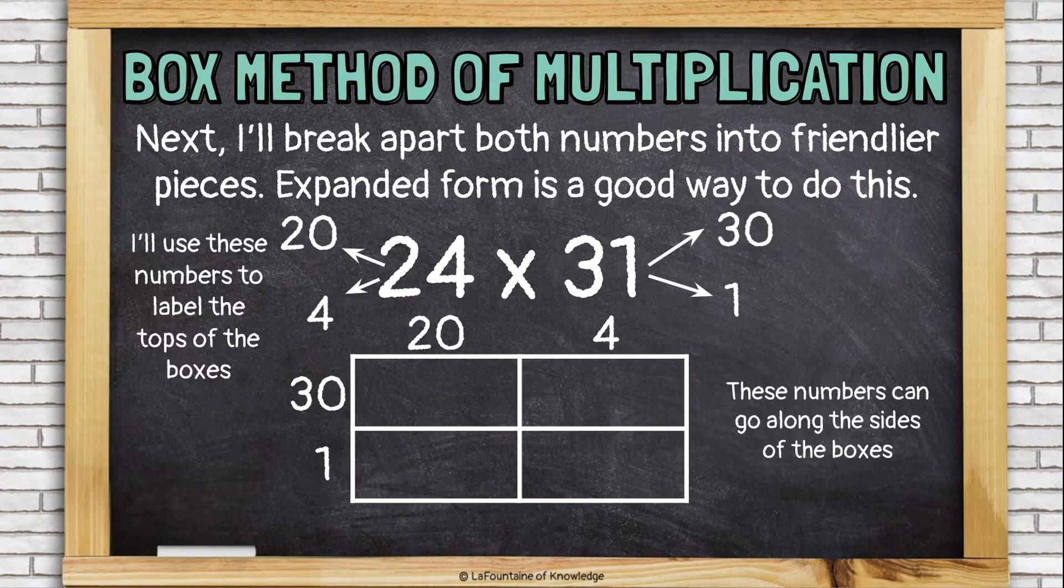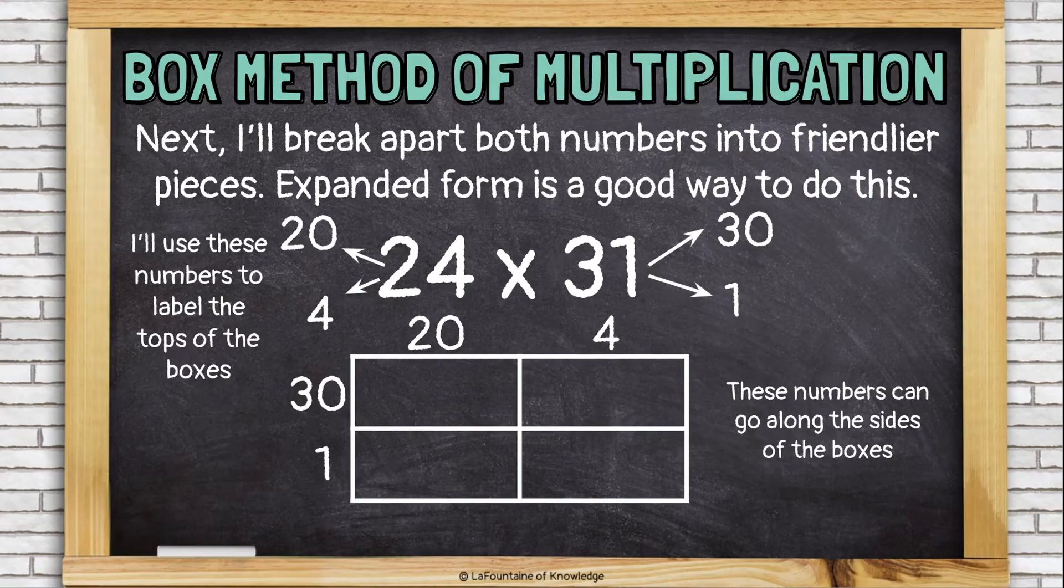And it doesn't really matter. You could put 30 and 1 on top and 20 and 4 on the side as long as you keep those together. The 20 and the 4 need to stay together and the 30 and the 1 need to stay together because they're part of the same number.